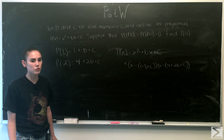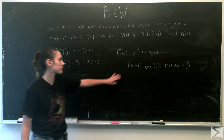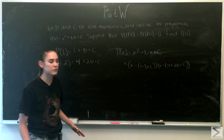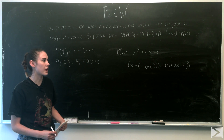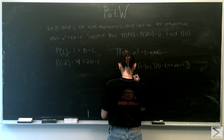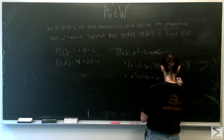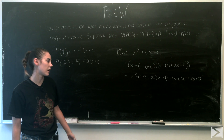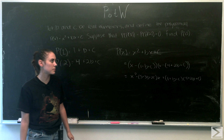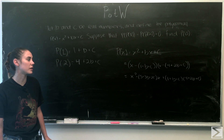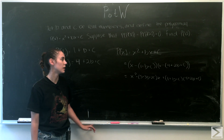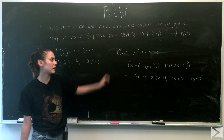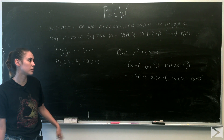Multiplying out and grouping like terms, we can transform this back into the standard form and match coefficients with the original polynomial. This gives us: x² − (5 + 3b + 2c)x + (1 + b + c)(4 + 2b + c). We can now create two equations to solve for b and c.